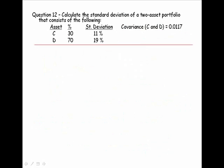Let's look at question 12. Calculate the standard deviation of a two-asset portfolio that consists of the following. We've got assets C and D, we've got their percentage, and we've got their standard deviation. Now, notice this. I gave you the covariance in a different way. The covariance here is in this decimal form.